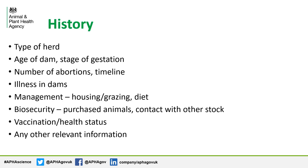During an abortion investigation it is really important to get a detailed history. We need to know if the herd is dairy or beef, how far in calf the dam is, and the age and parity of the dam. We want to know the timeline and details of previous abortions and whether dams are unwell. Are they housed, are they being fed, and is it a closed herd or do the cows have contact with other stock? Vaccination and health status and any other relevant information such as footpaths on the farm or recent management changes should also be recorded.